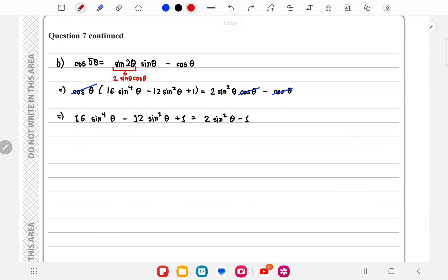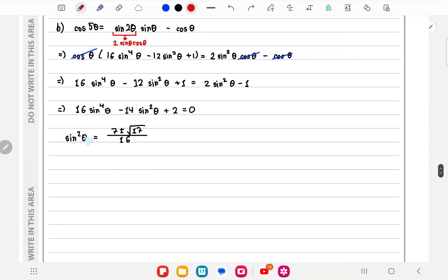And then you can solve this like a quadratic, and you'll get the value of sin² θ to be (7 ± √17) / 16.